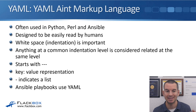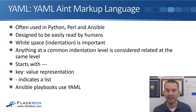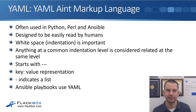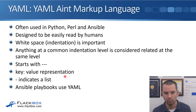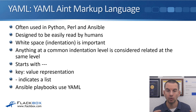The last format is YAML, which stands for YAML Ain't Markup Language. YAML is often used in Python, Perl, and Ansible. Like JSON, it's designed to be easily read by humans. A key difference: in YAML, whitespace and indentation are important. Anything at a common indentation level is considered to be related at that same level. YAML files always start with three dashes to indicate it's a YAML file, it uses key-value representation, and a dash indicates a list. Your Ansible playbooks use YAML.